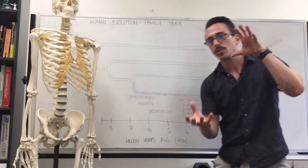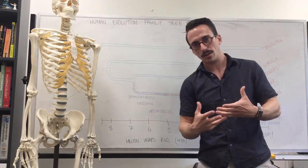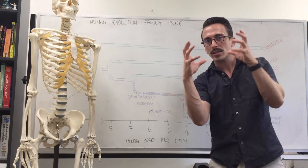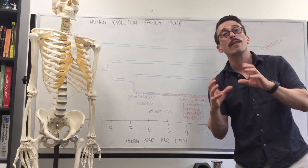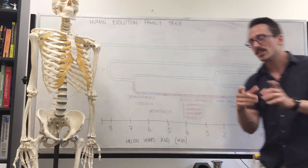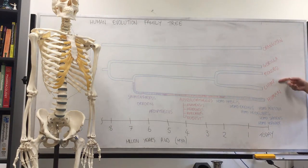Australopithecus were quite small, around about 40 kilos. They had a very small brain size, and we know this because it's very similar, around about 500 cc's and less, which is quite similar to the gorillas and chimpanzees.